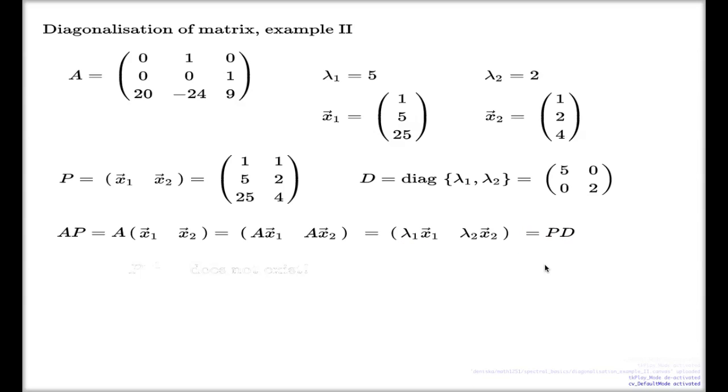So we do have semi-diagonalization in this case. However, we do not have complete diagonalization because this P matrix is not even a square matrix, let alone invertible. Because P is not a square matrix, you don't have the inverse, and that's why you do not have diagonalization.